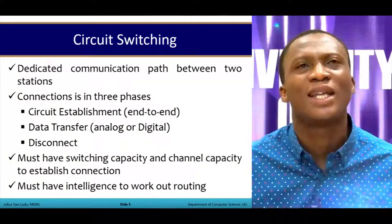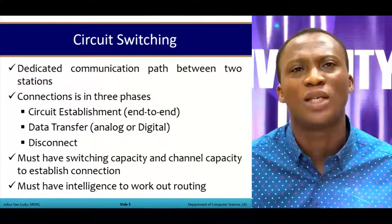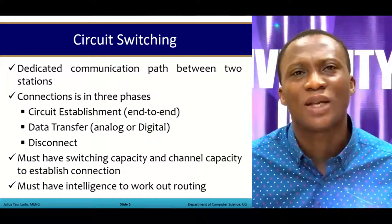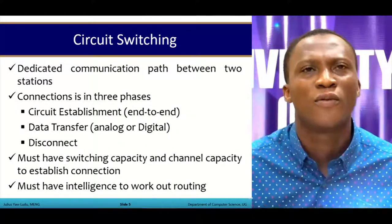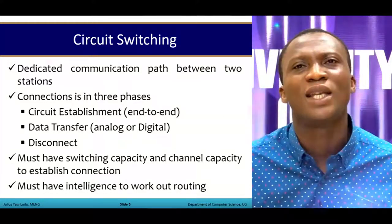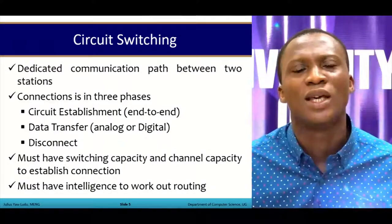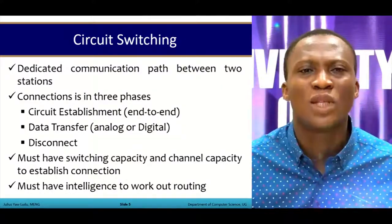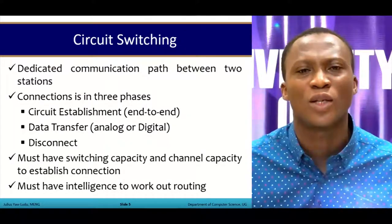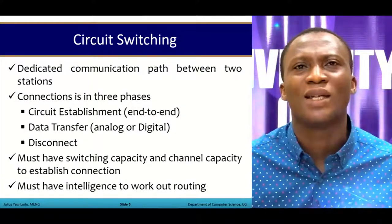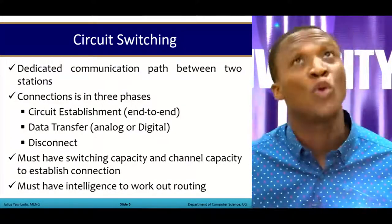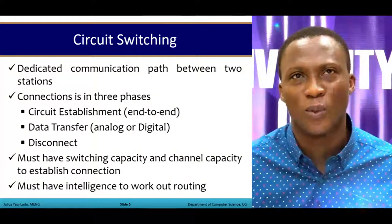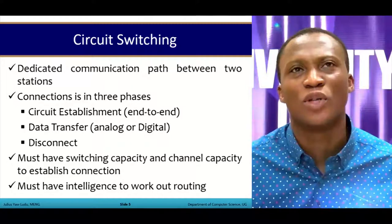For circuit switching, there is a dedicated communication path between two stations — a clear connection or cable going from station one to station two. Anytime one needs to send data, it uses that dedicated link. Connections occur in three phases. First, the two stations establish an end-to-end connection, known as circuit establishment, confirmed with an acknowledgement such as ACK 0 or ACK 1.